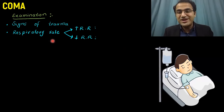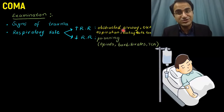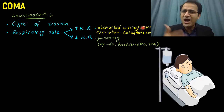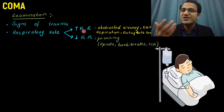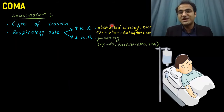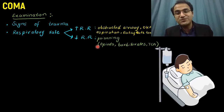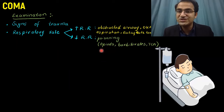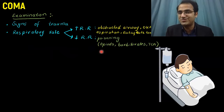Check the respiratory rate, as it gives a hint about the type of toxicity or cause of coma. If the respiratory rate is increased, it is seen in obstructed airway, DKA with hyperventilation, aspiration, and salicylate toxicity — these patients are acidotic and trying to wash out CO2. If the respiratory rate is decreased, it indicates poisoning by substances like opiates, barbiturates, or TCAs, all of which cause respiratory depression.